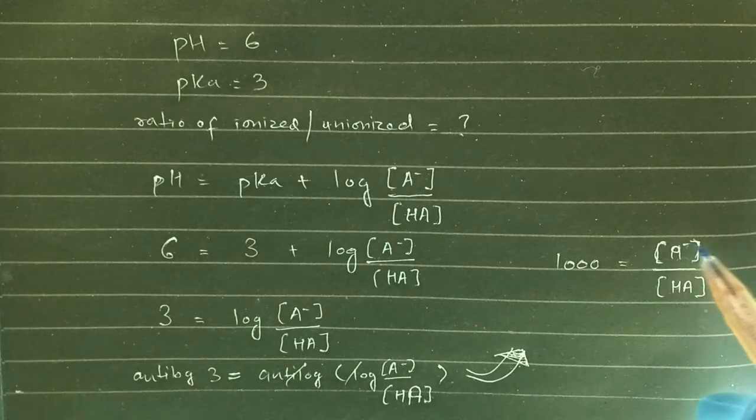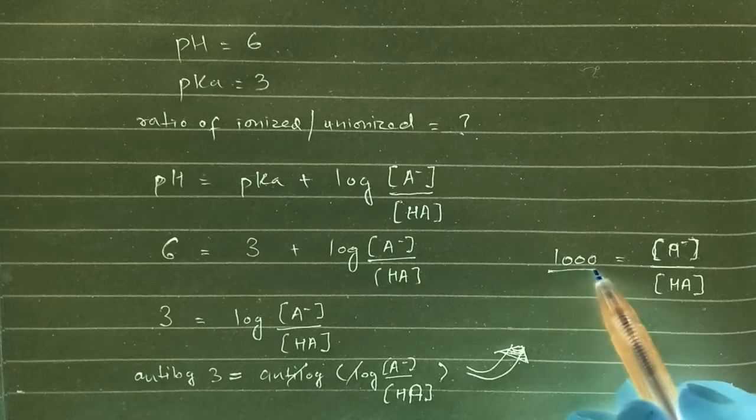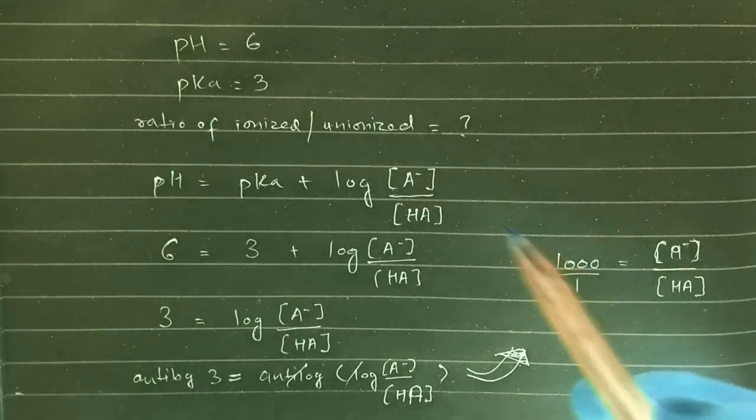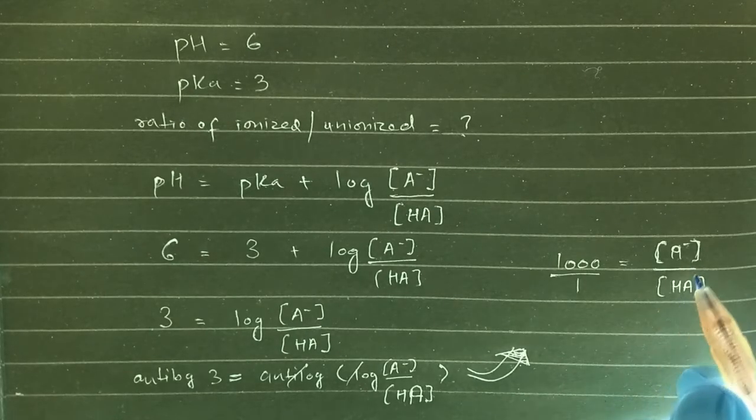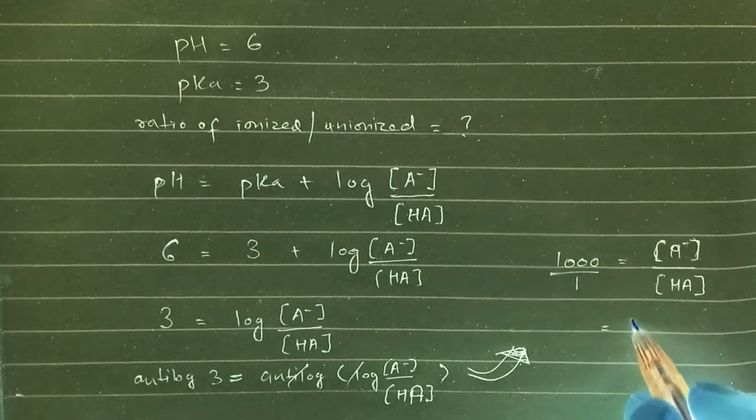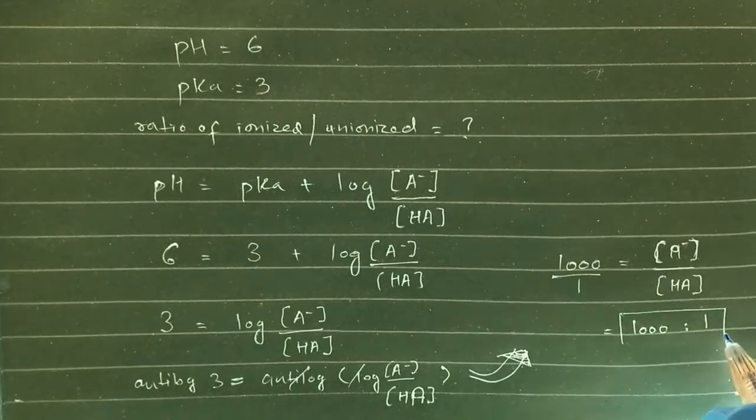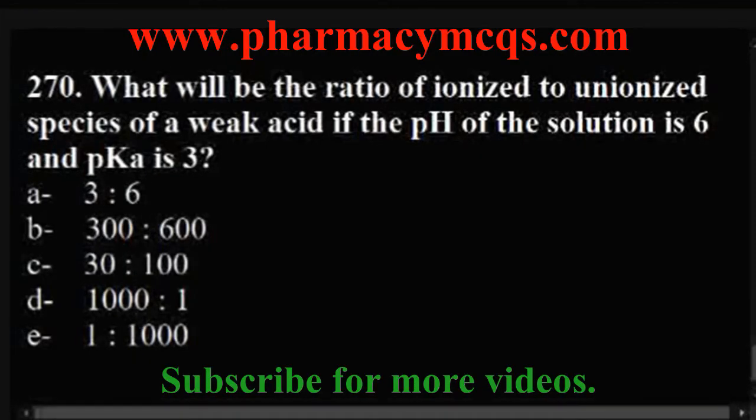So this is the final answer for the ratio of 1000, and it can also be written as 1000 divided by 1. So our answer for this calculation problem is the ratio of ionized to unionized equal to 1000:1. So our correct option for this pharmacy calculation is D.